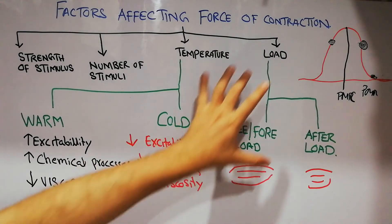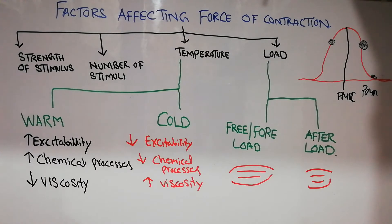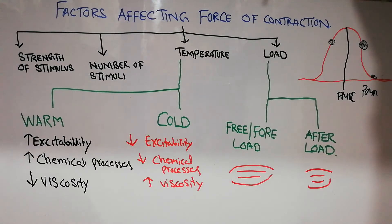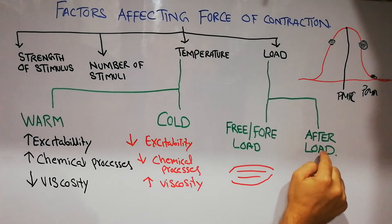Now we discuss the effect of load on skeletal muscles. Load on skeletal muscles could be after load or fore load or free load. After load is the load which acts on the muscle only after the muscle fiber has contracted and its length has decreased. For example, when lifting a weight from the ground, the weight applies force on the muscle only after it has been lifted. The muscles must contract before lifting, so that weight is considered after load.